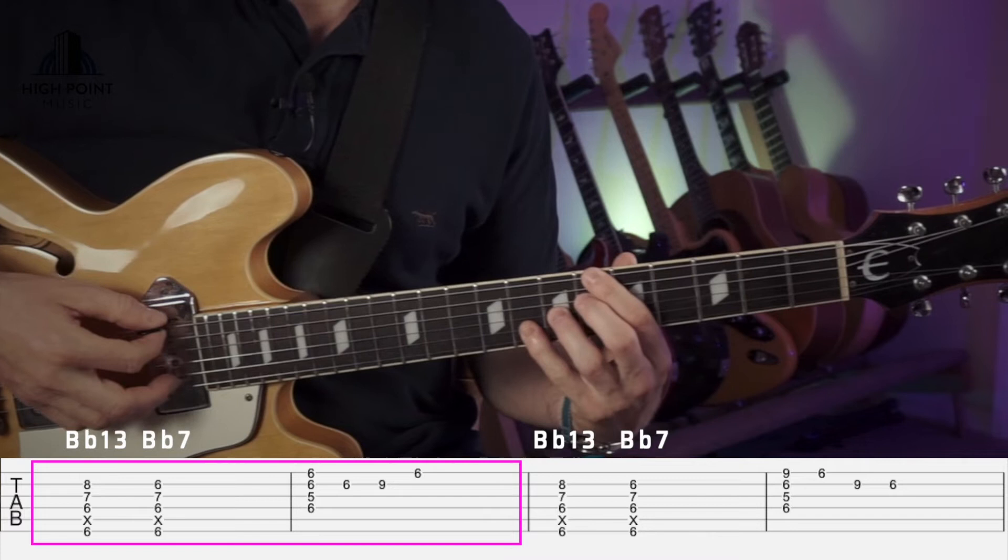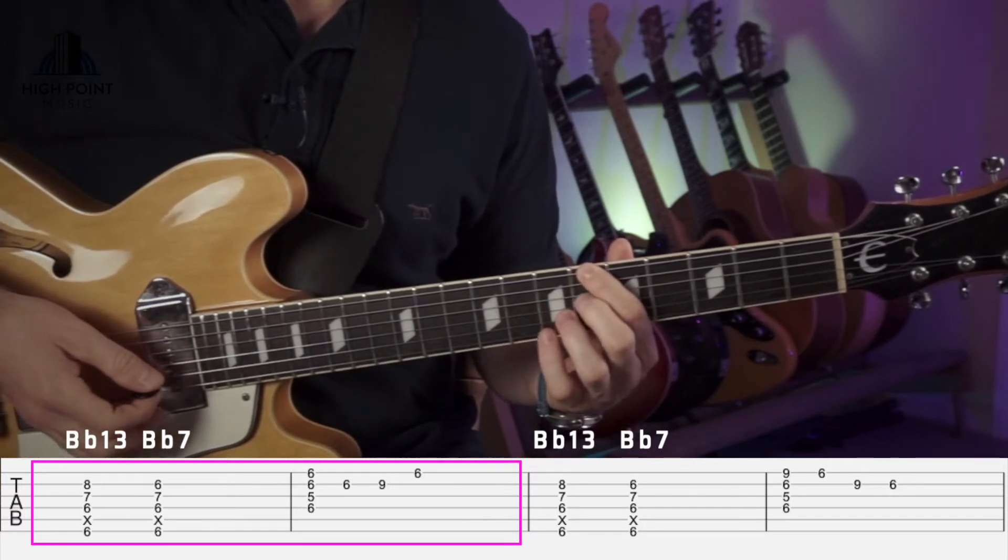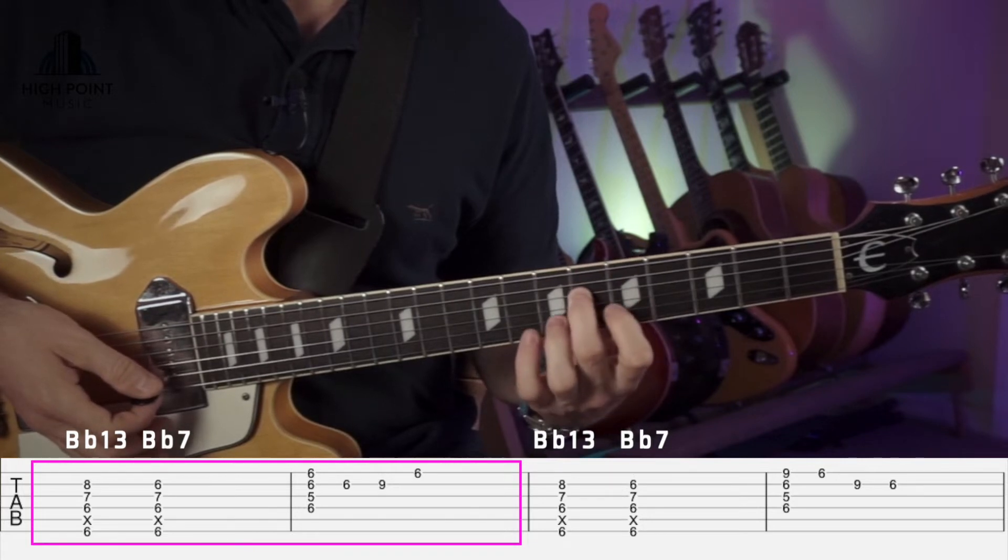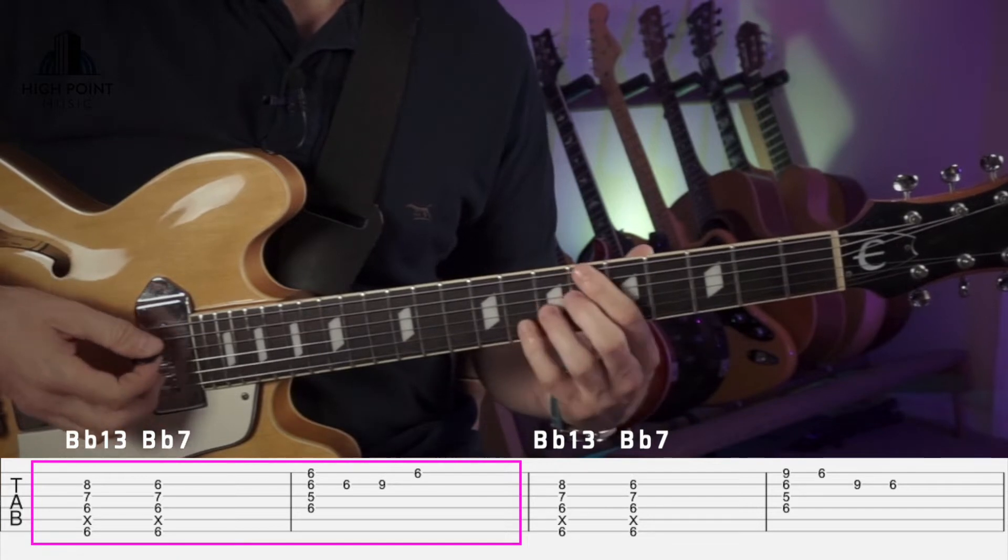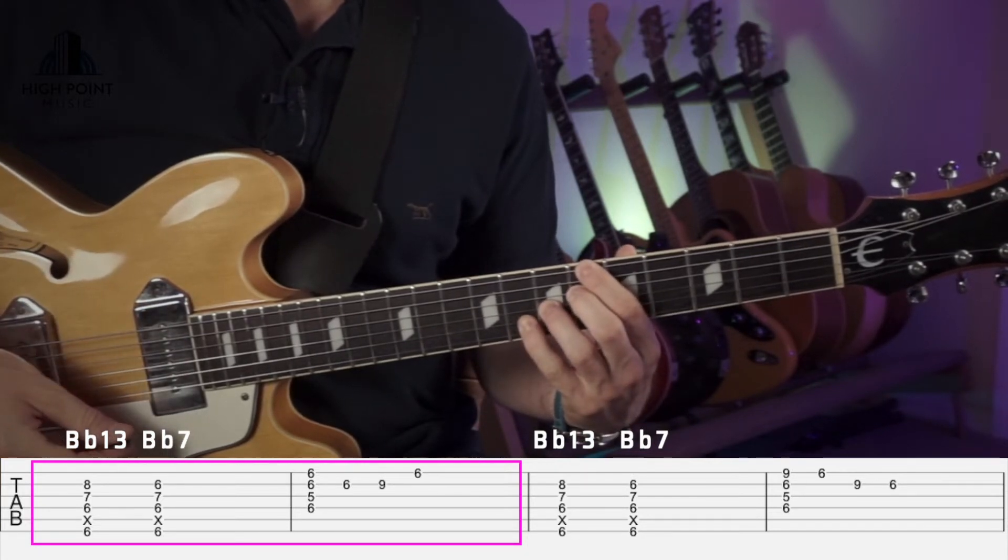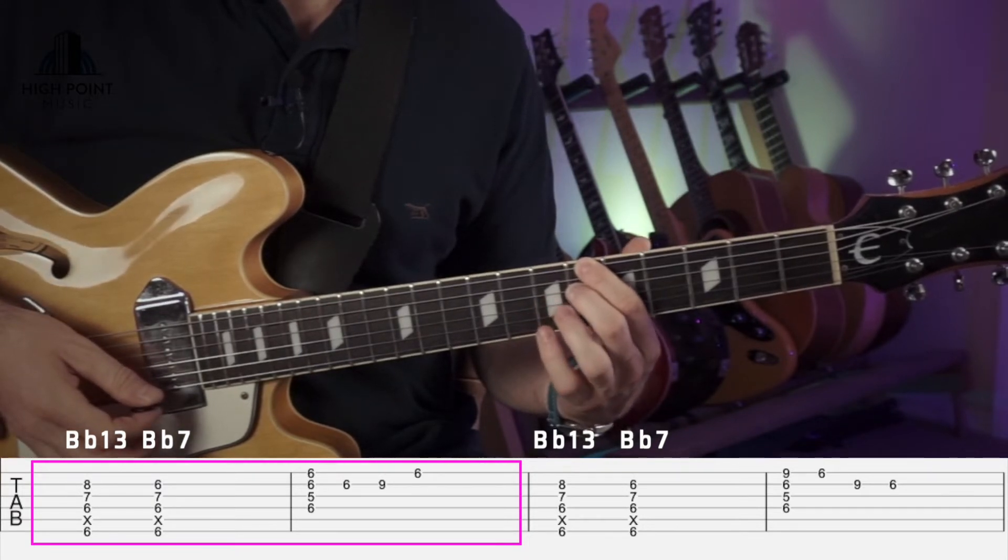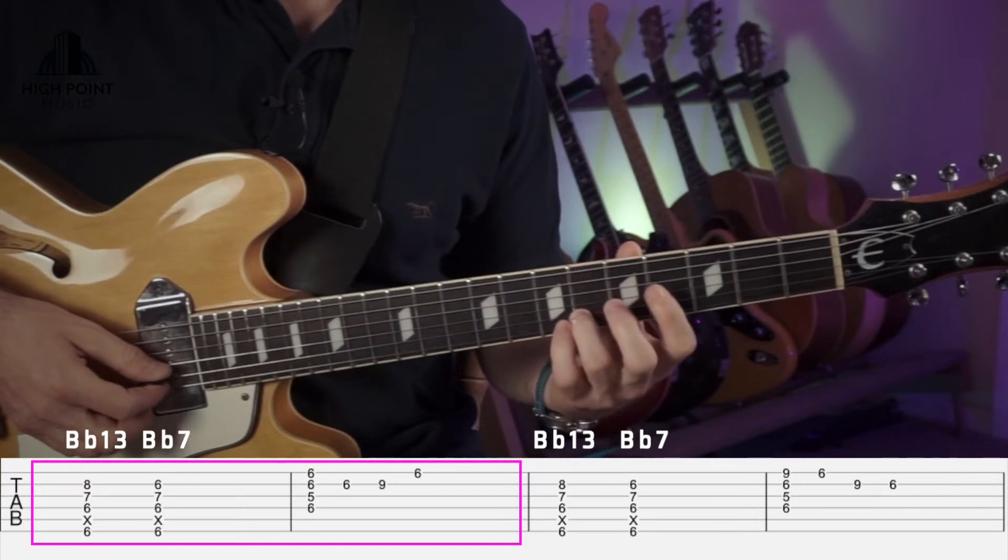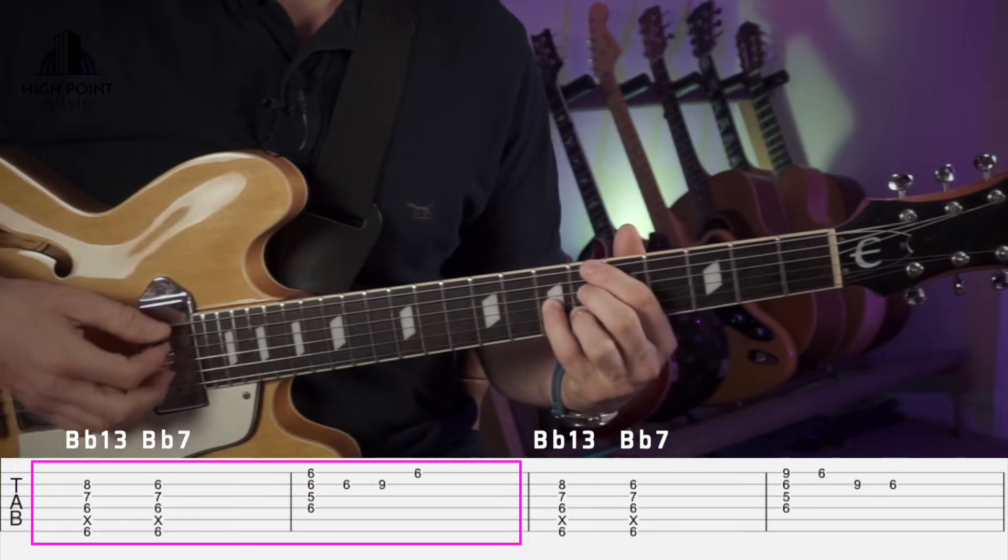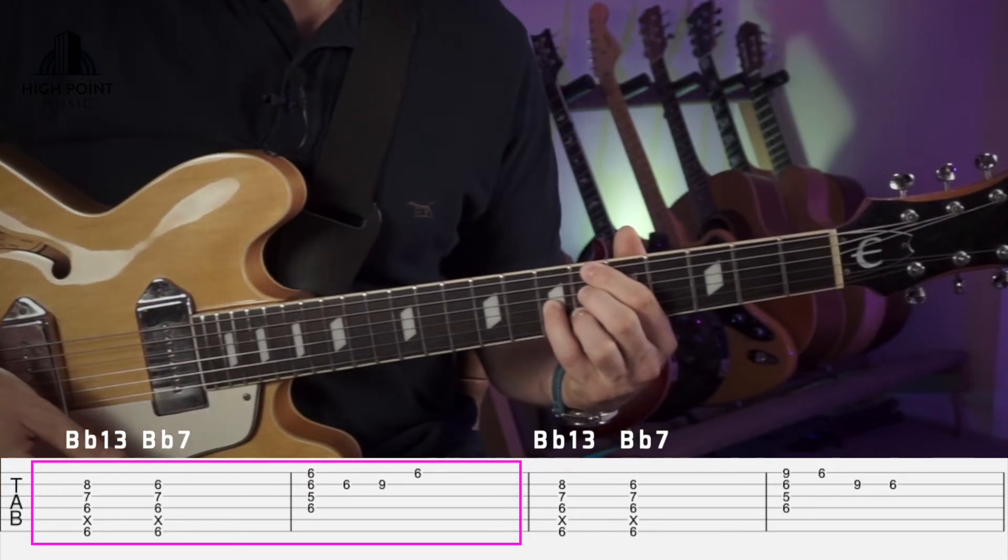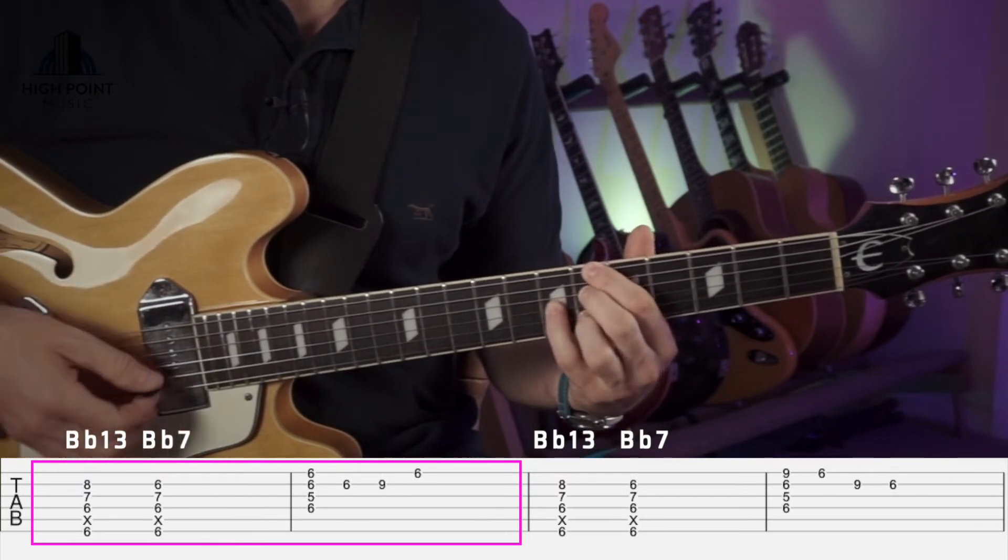Okay, so our first section here we've got a Bb13 voicing, which is just our first finger on the 6th fret, second finger on the 6th fret on the D, third finger on the 7th fret on the G, and then our fourth finger on the 8th fret on the B string. So that's our Bb13, and then to get to a straight Bb7 we're keeping our first and second fingers still, our third finger's coming in to the F note there, and our fourth finger's taking the D on the 7th fret there. So just practice that transition using your third and fourth fingers.